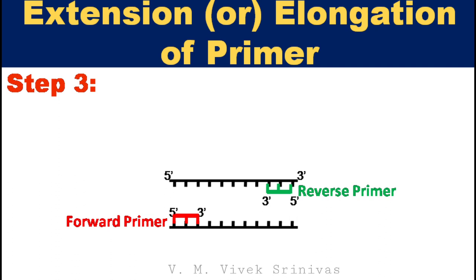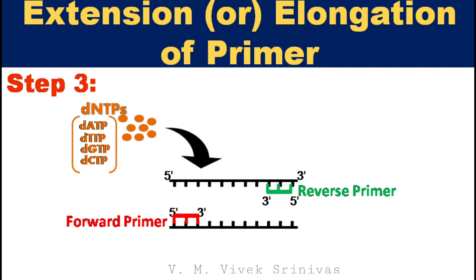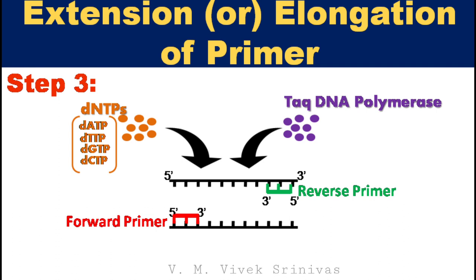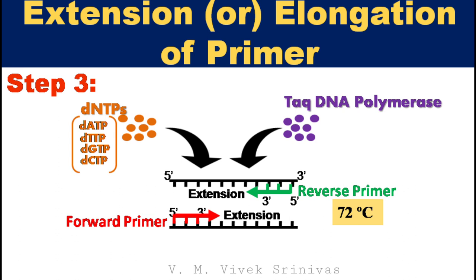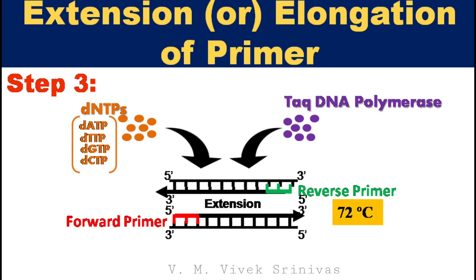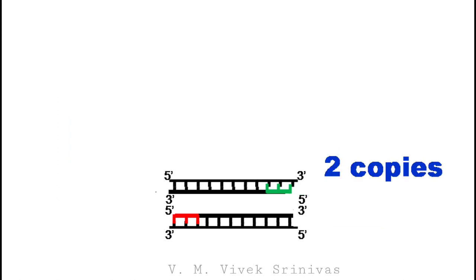Step 3: Extension, or elongation, at 72 degrees Celsius. In the presence of dNTPs — the building blocks of DNA — and Taq DNA polymerase, which has maximum activity at 72 degrees Celsius, the bound primers start to elongate. Due to DNA polymerase enzyme activity, the DNA gets extended by adding nucleotides to the 3-prime ends of the primers. At the end of elongation, two copies of double-stranded DNA are synthesized.